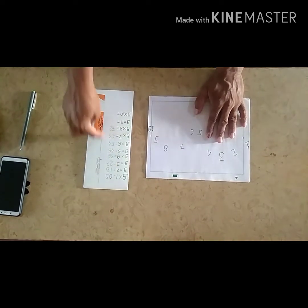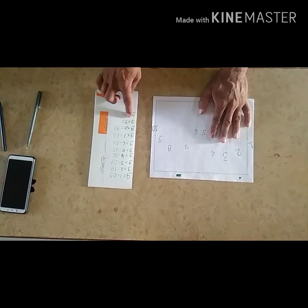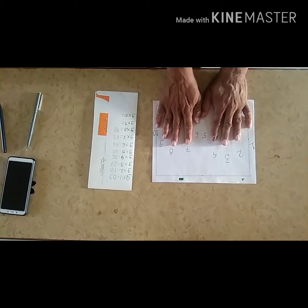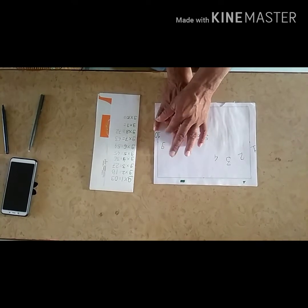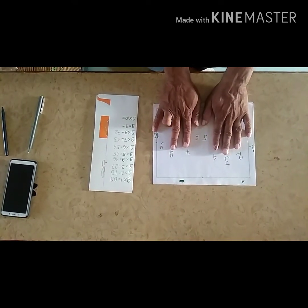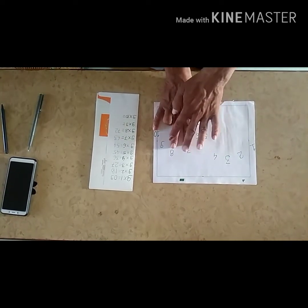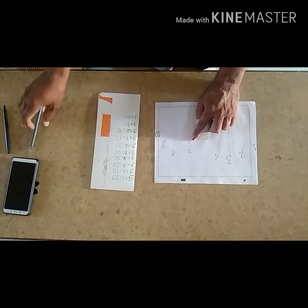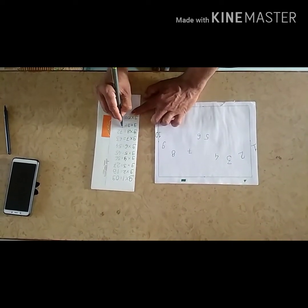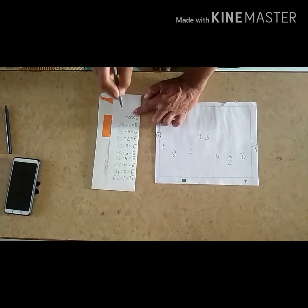Now, in this way, we come to 9 into 8, 72. Now 9 into 9. For 9 into 9, we will fold the 9th finger and count on the left side: 5, 6, 7, 8. 8 fingers on the left, 1 on the right. So we will write 8, 1. That is 81. 9 into 9, 81.